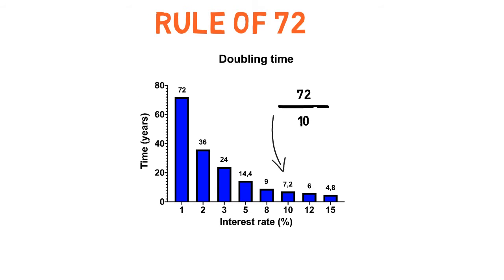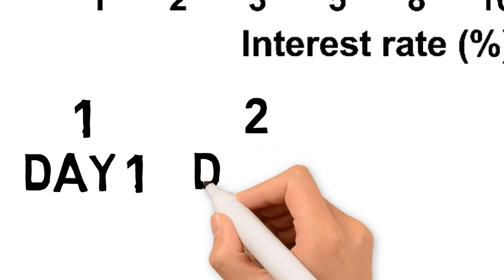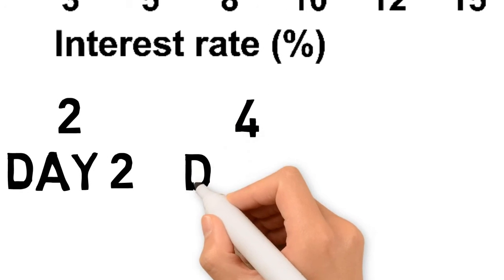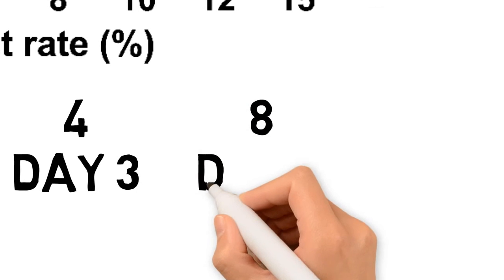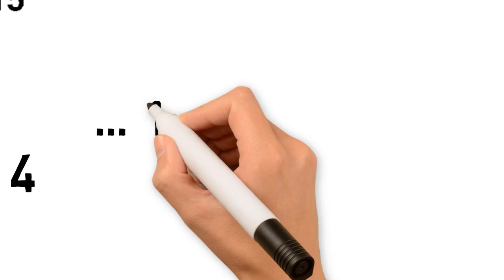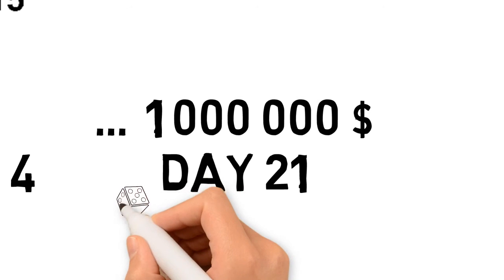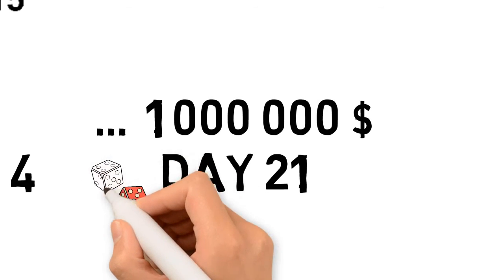To really understand how powerful compound interest is, imagine you start with $1 and double your money each day. On the second day you'll have $2, on the third day $4, on the fourth day $8, and so on. Do you know how long it will take to reach $1 million? Just 21 days. It's far from realistic to think you can double your money every day, but this shows how powerful compound interest really is.